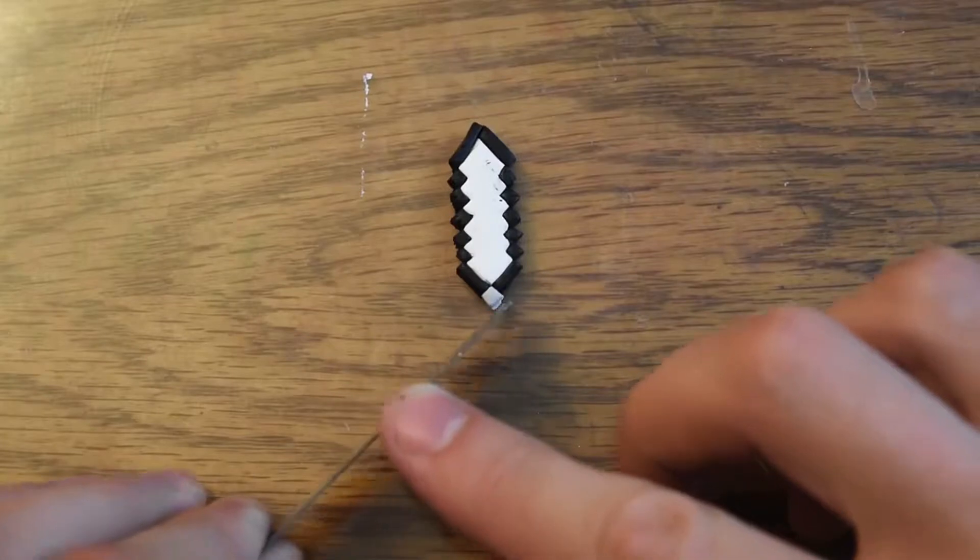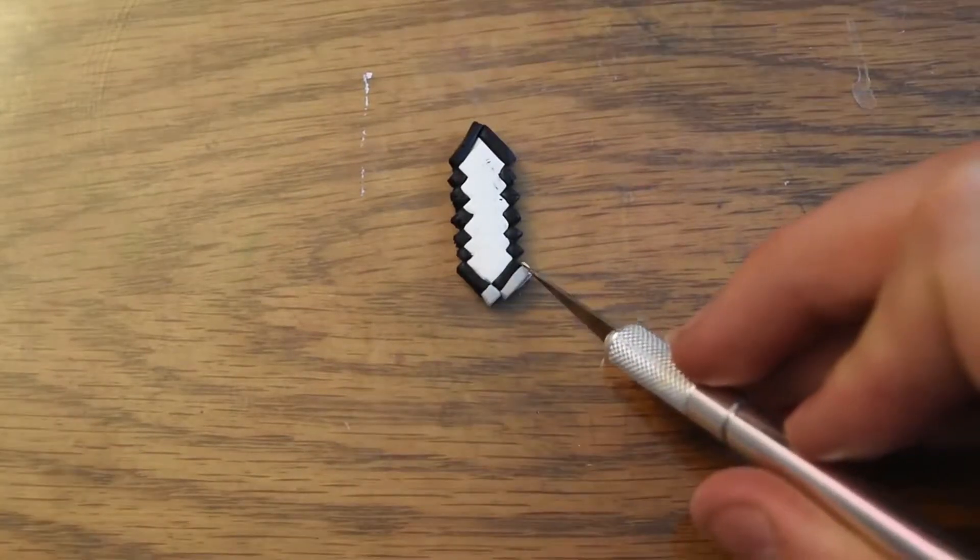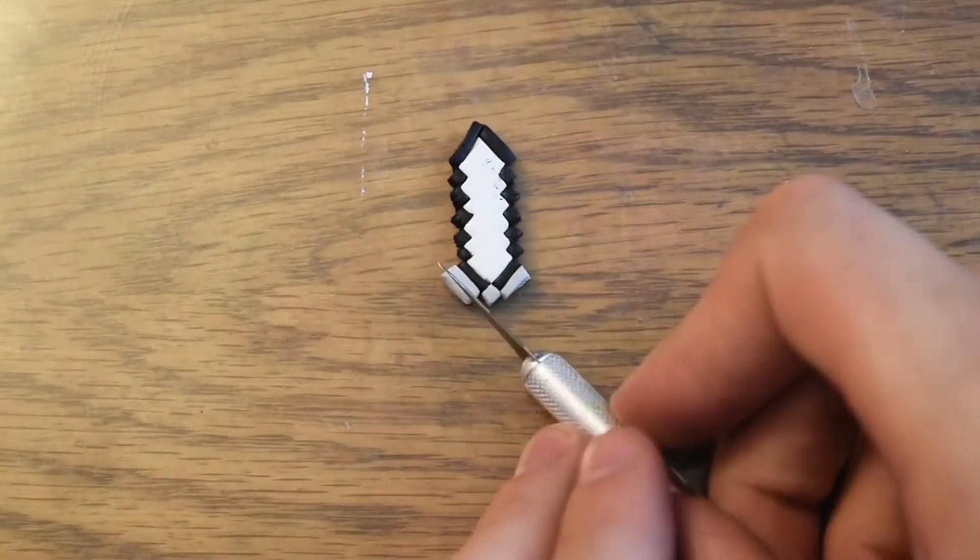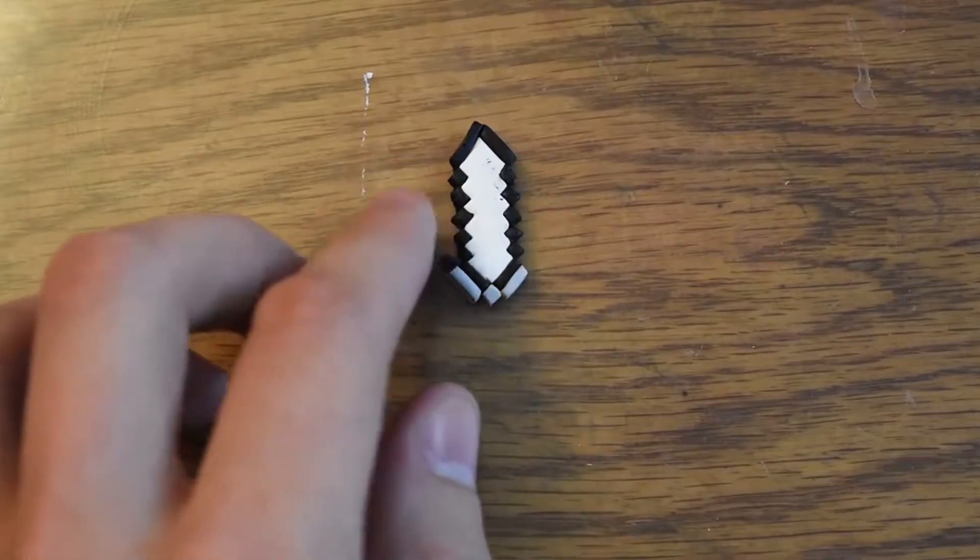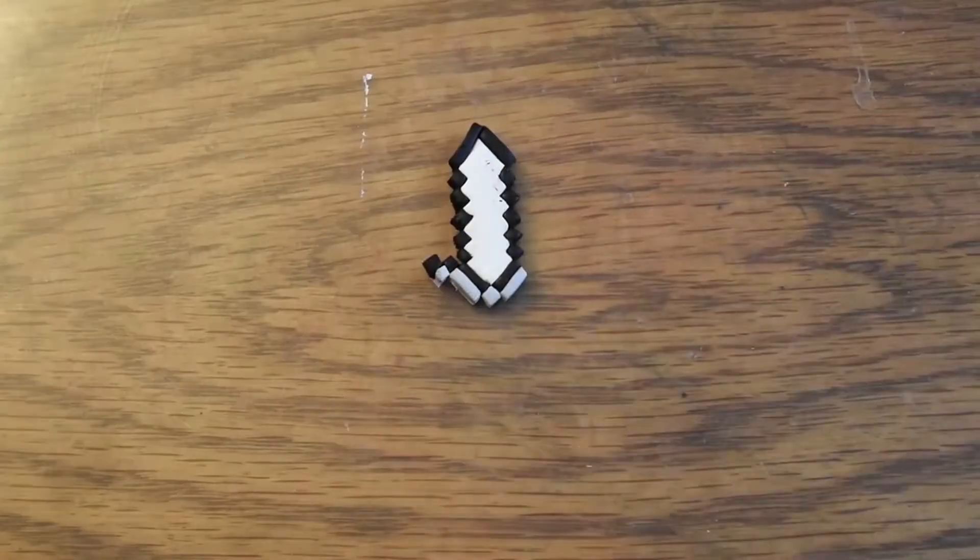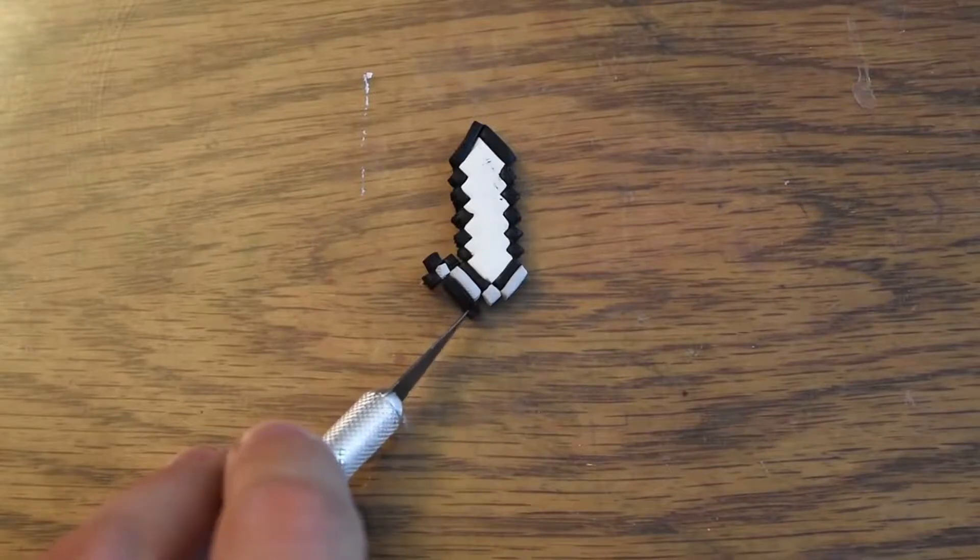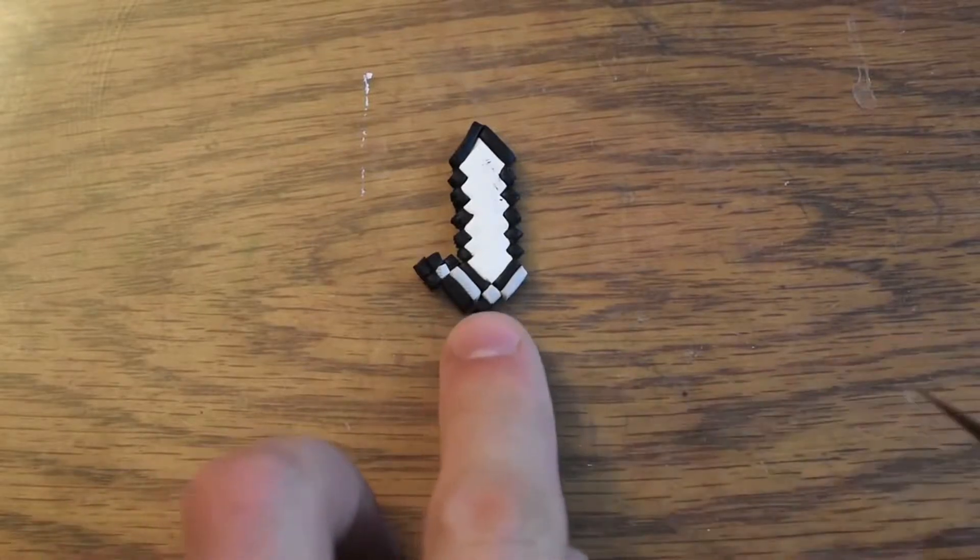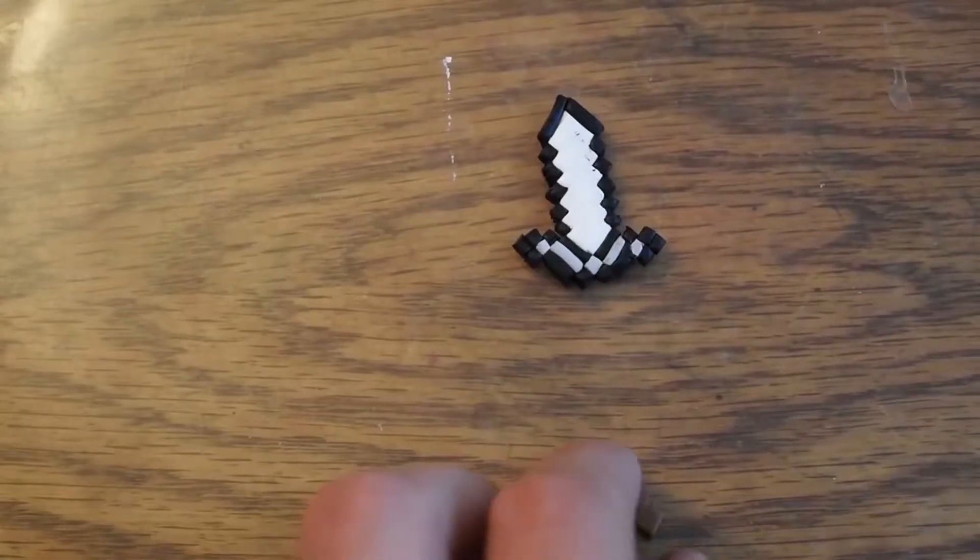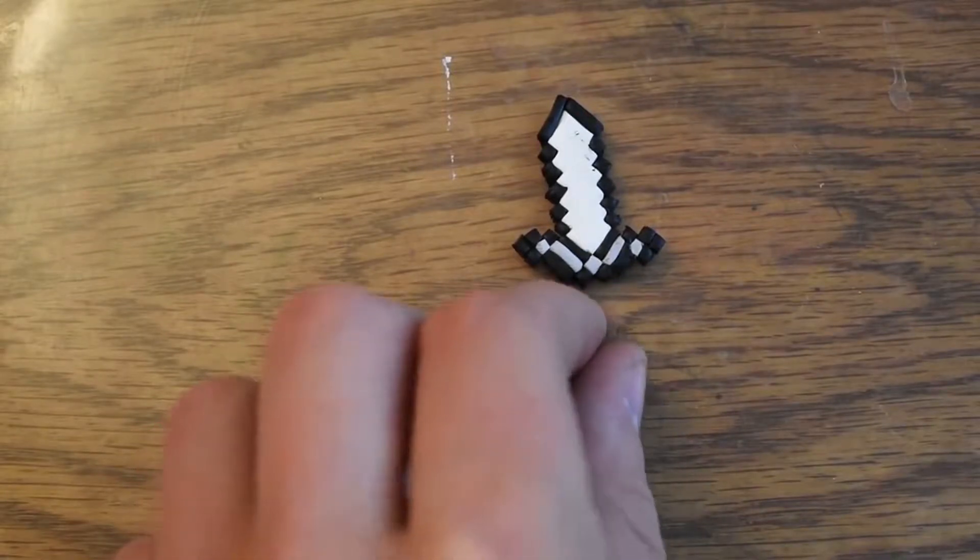And we need some gray at the bottom to create, well I think this is called the hilt, which is the part that's before the handle on the sword. We can outline that. And we need a little bit of brown for the handle. And now everything is ready to get baked.